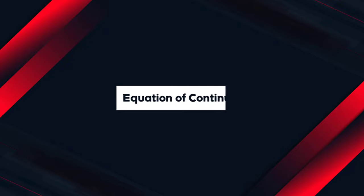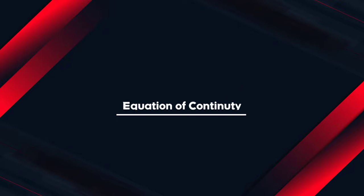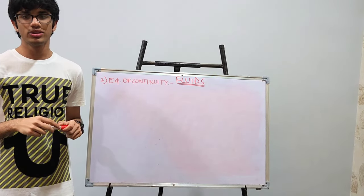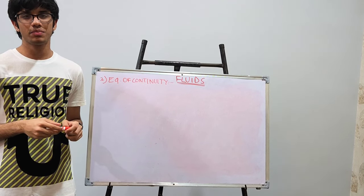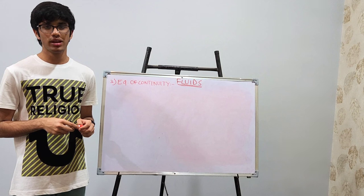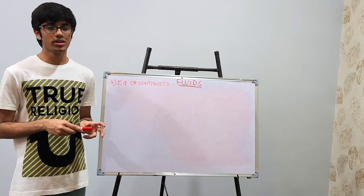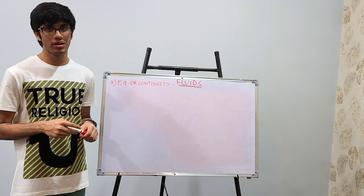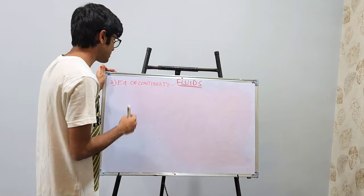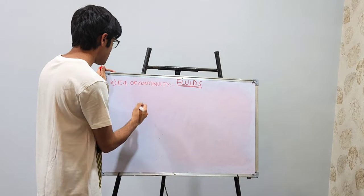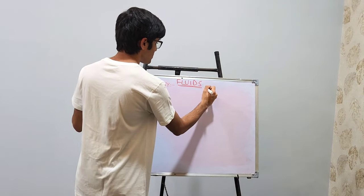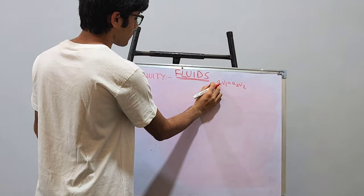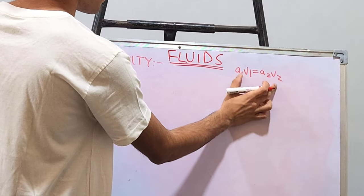Let's move on to the next topic: the equation of continuity. The equation of continuity basically states that during the streamlined irrotational flow of an incompressible and non-viscous fluid through a pipe of varying cross-sectional area, the product of the area of cross section and the normal velocity of the fluid always remains constant. What I need to derive is A1 V1 equals A2 V2.